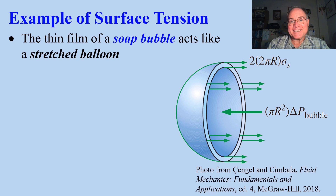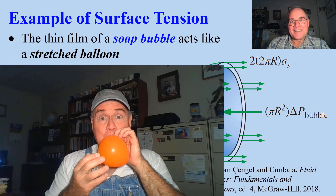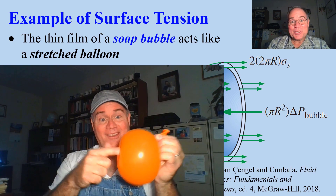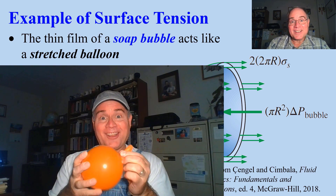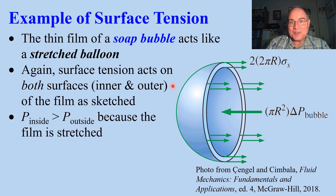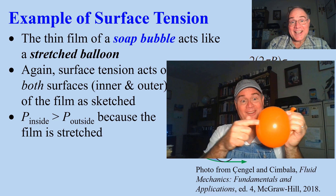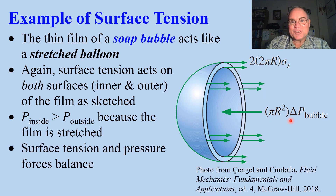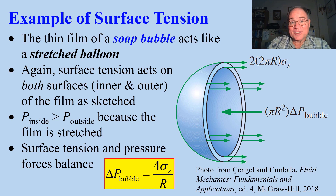A soap bubble is a great example of surface tension. The bubble acts like a stretched balloon. Surface tension acts on both surfaces — the inner and the outer surface. The pressure inside the soap bubble is greater than the pressure outside because the film is stretched like a balloon. Surface tension forces and pressure forces must balance. You can easily solve for the pressure difference: 4 times sigma s divided by the radius of the bubble.